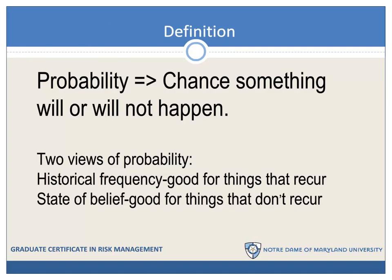Since we're reviewing probability, we're not going to use the most rigorous definitions, but try to help you develop your informal understanding of these concepts. We're going to define probability simply as the chance that something will or will not happen. When the probability of rain is 60%, that means there's a 60% chance it will rain and a 40% chance it won't. There are two broad views of probability — the first is historical frequency.